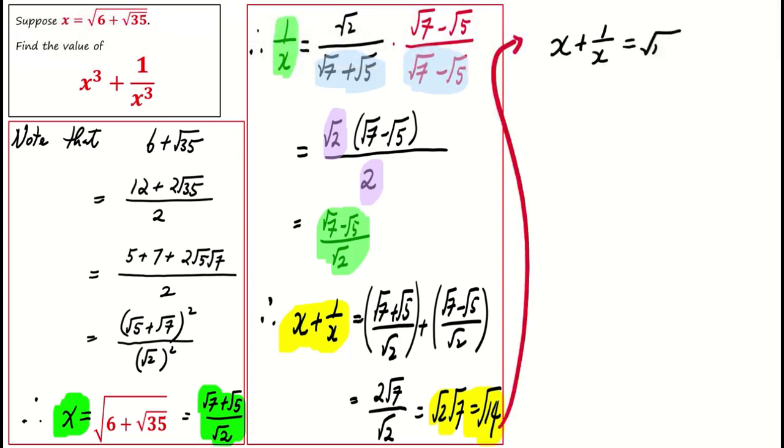From x plus 1 over x equals square root of 14, square both sides. We obtain x² plus 1 over x² plus 2 equals 14. Hence, x² plus 1 over x² equals 12.